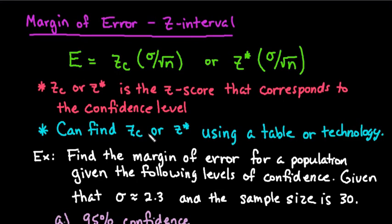For the z-interval, the formula that we use to calculate the margin of error is E equals z_c times sigma divided by the square root of n, where z_c corresponds to your level of confidence, sigma is the population standard deviation, and n is the sample size.